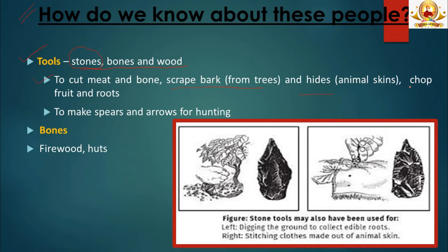The tools might also have been used to chop fruit and roots, and some may have been attached to handles to make spears and arrows for hunting. Bones of animals help us understand which animals were hunted. Some tools were used to chop wood for firewood. Wood was also used to make huts and tools. One image shows a stone tool being used to dig the ground for edible roots; another shows an animal skin being scraped to stitch clothes.